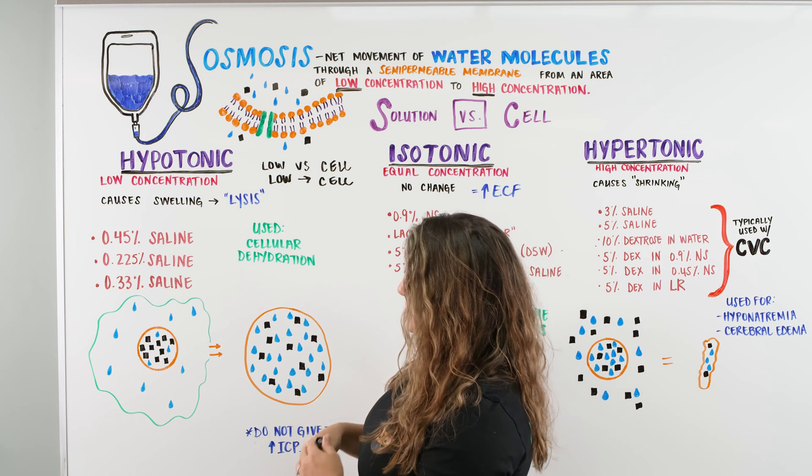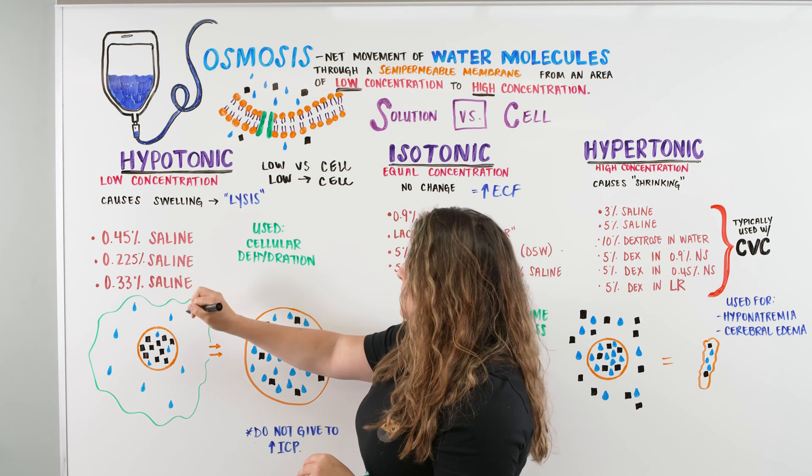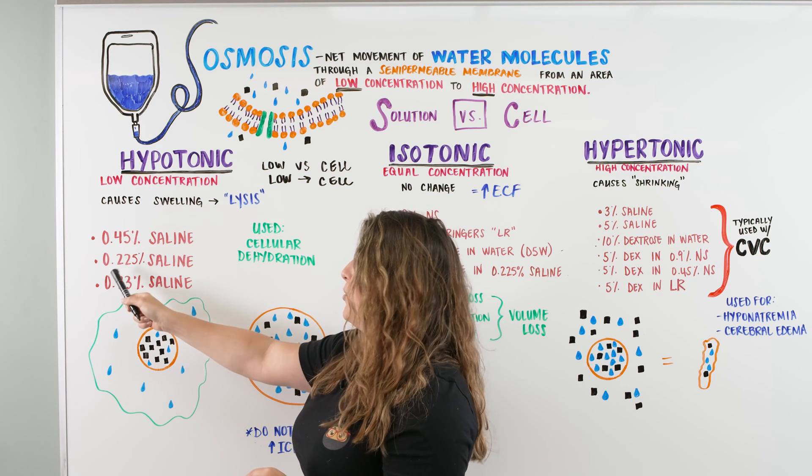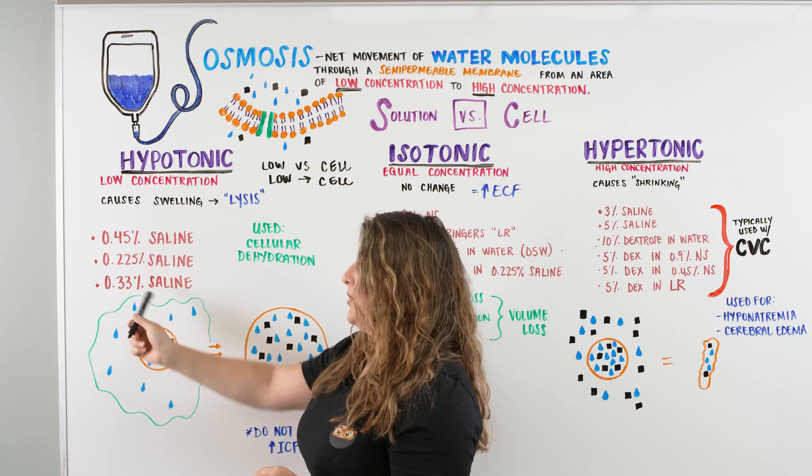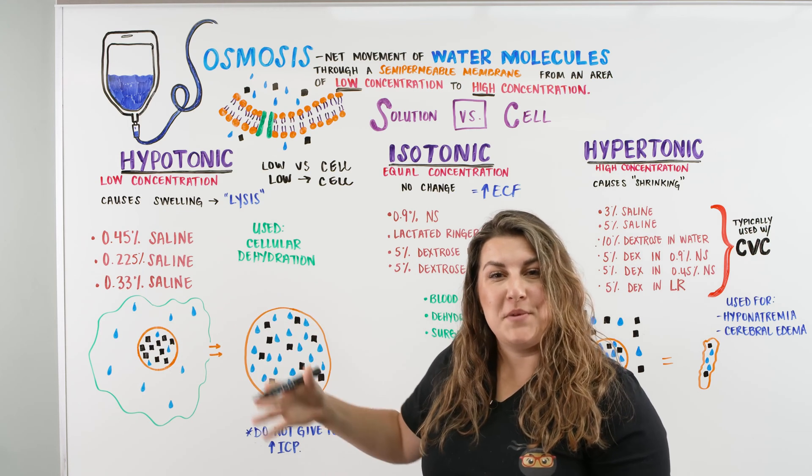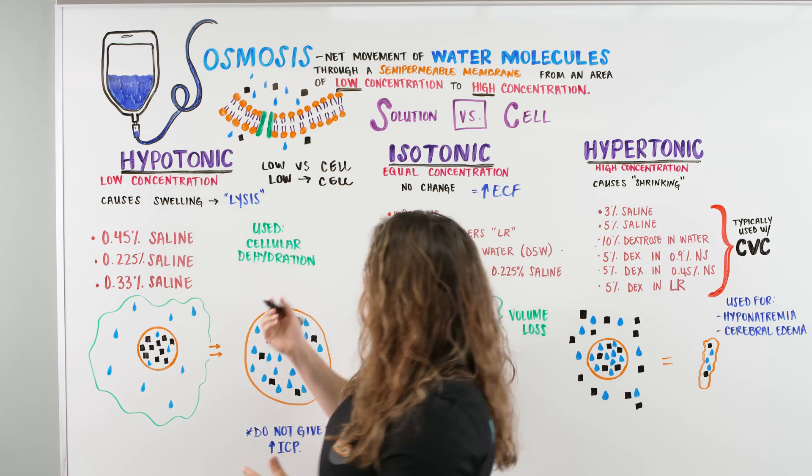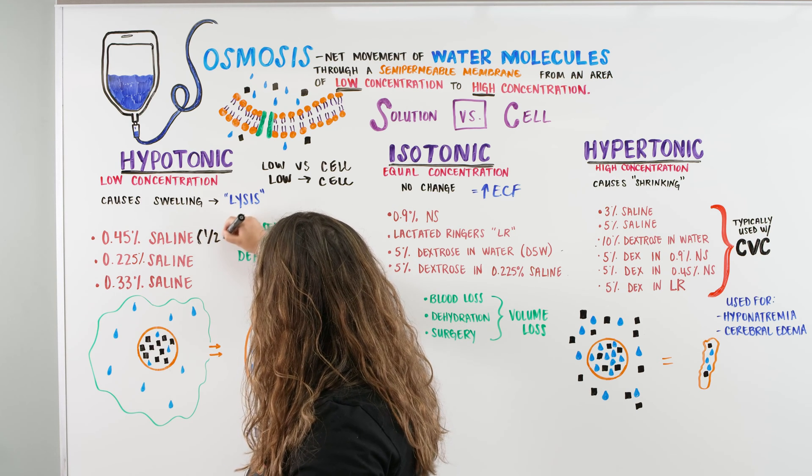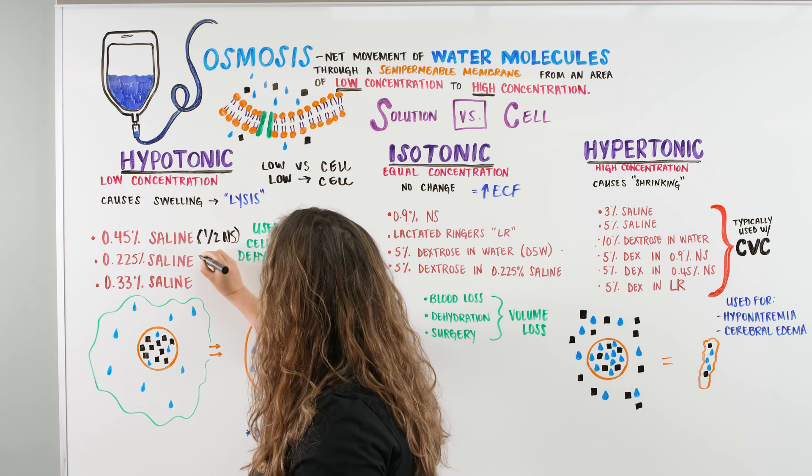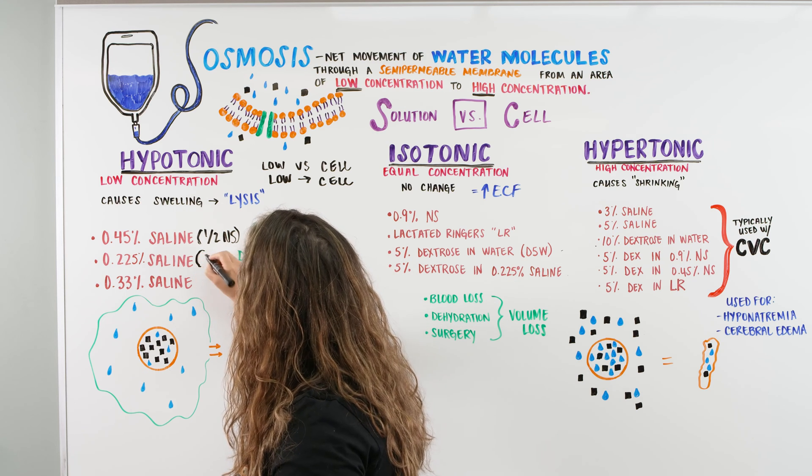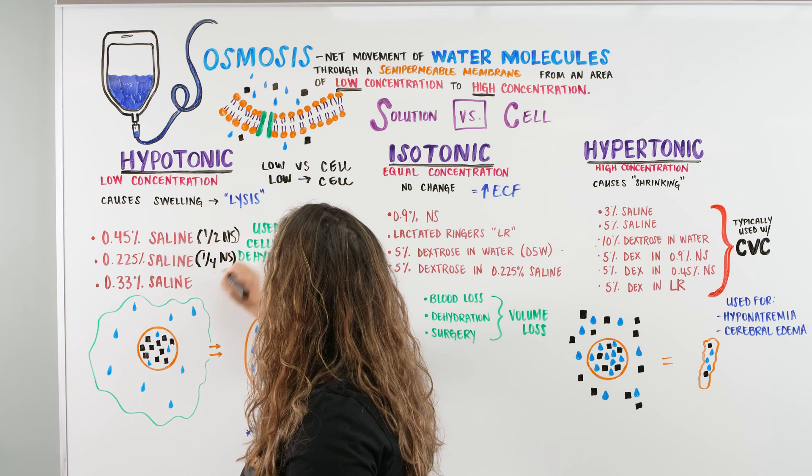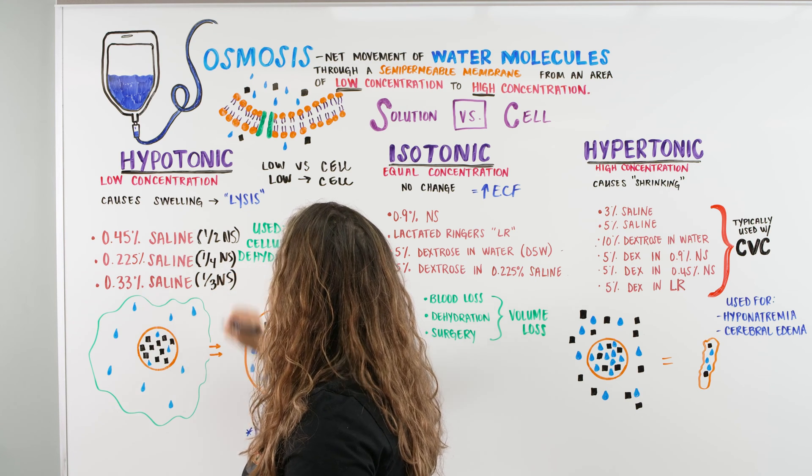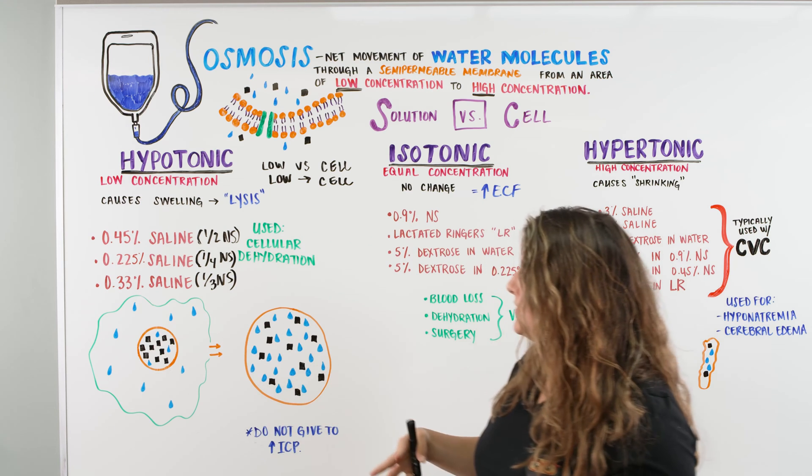So what are some solutions that are hypotonic? We have three of them right here. We have a 0.45% saline, 0.225% saline, and a 0.33% saline. These are all solutions that we can give, but we don't typically call them in the nursing setting. We call them either half normal saline or quarter normal saline or a third.